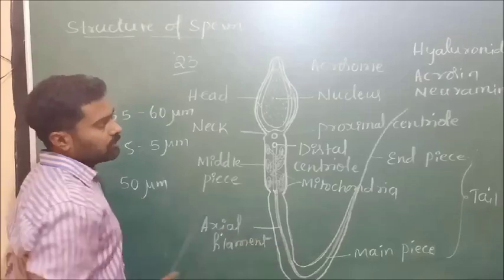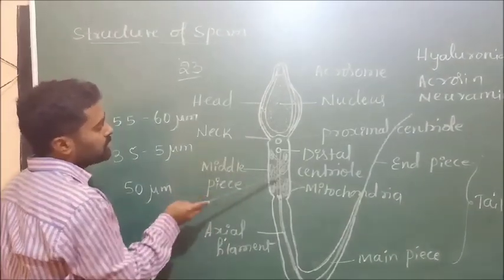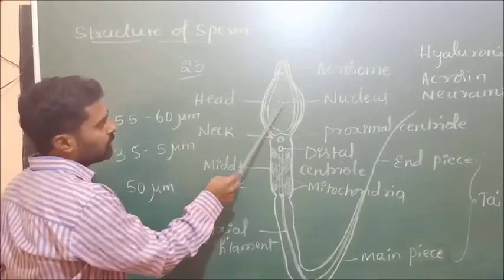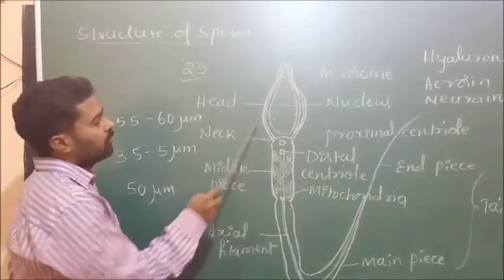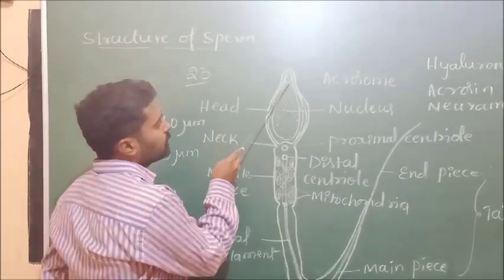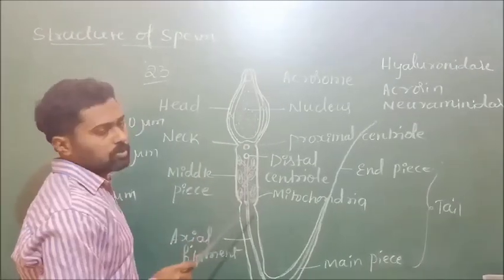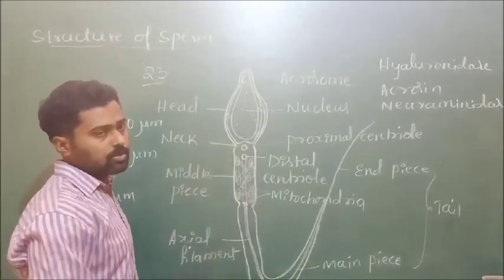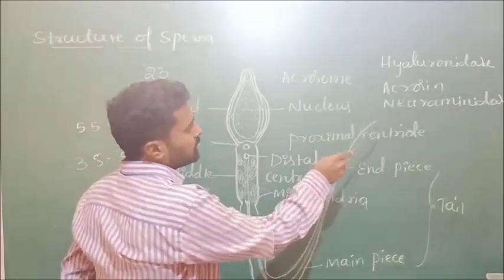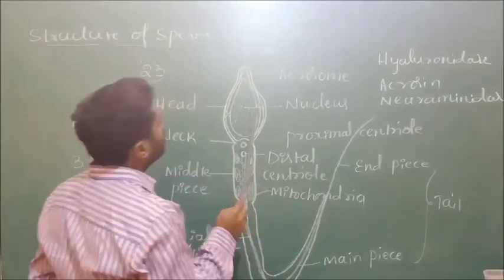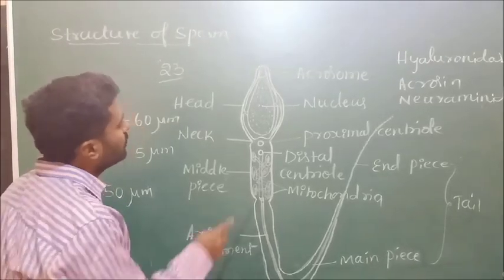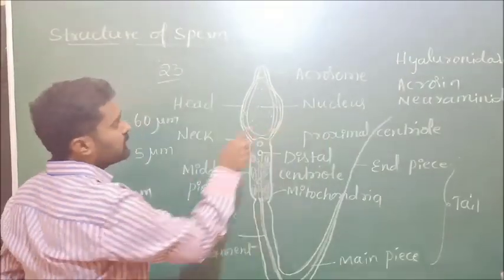The sperm mainly consists of three regions: the head, middle piece, and tail. The head portion encloses a flattened large nucleus. Anterior to the nucleus is a structure called the acrosome — a cap-like structure that secretes enzymes like hyaluronidase, acrosin, and neuraminidase, which are responsible for degradation of the wall of the ovum during fertilization. The acrosome is derived from the Golgi bodies of the spermatids.